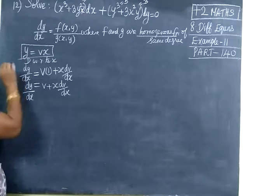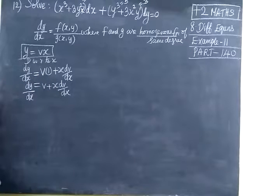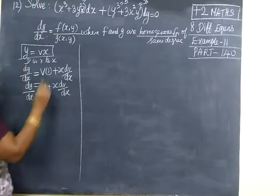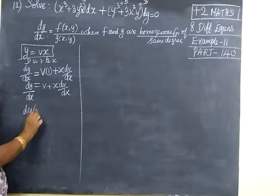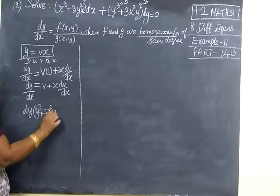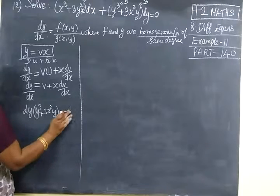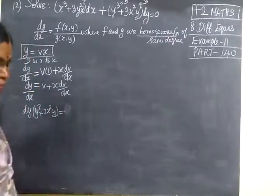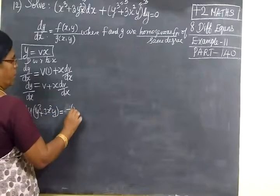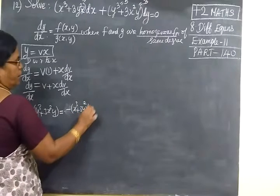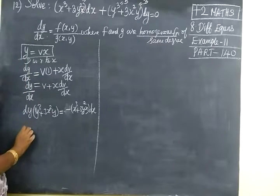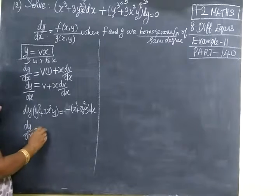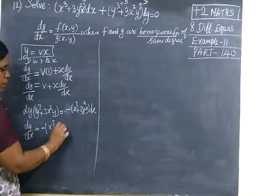Now y equal to vx. Later we are substituting the y value. Before this you split the terms. You would keep dy by dx with y squared plus 3x squared y equal to zero. Take the term to the other side, so you get dy by dx equal to minus x cubed plus 3y squared r, then bring dx to the denominator. So dy by dx equals minus x cubed plus 3y squared r.